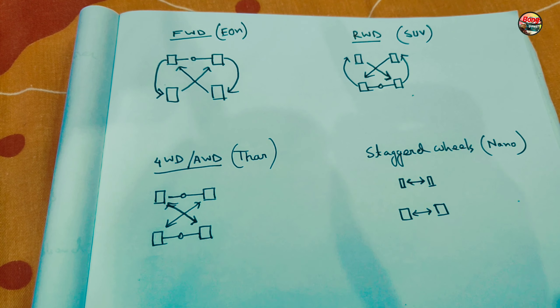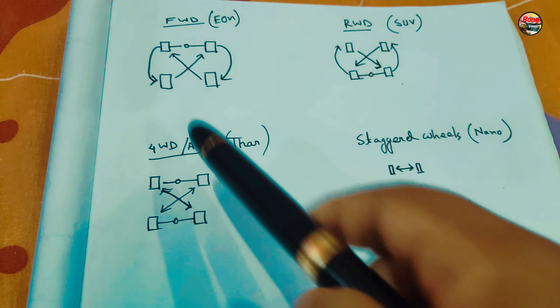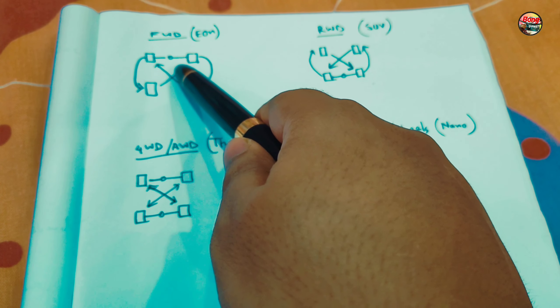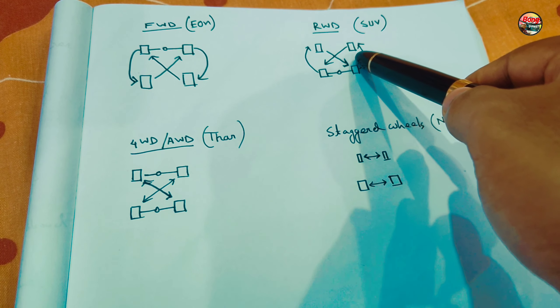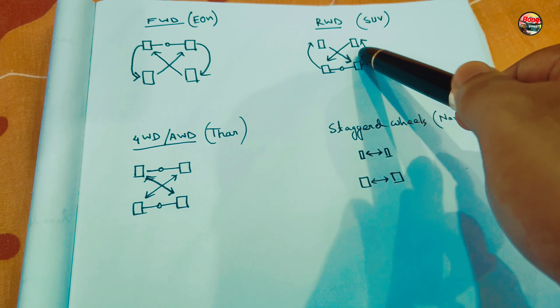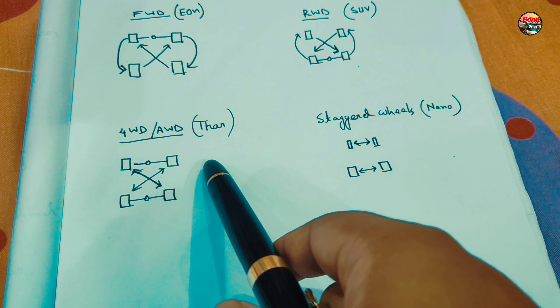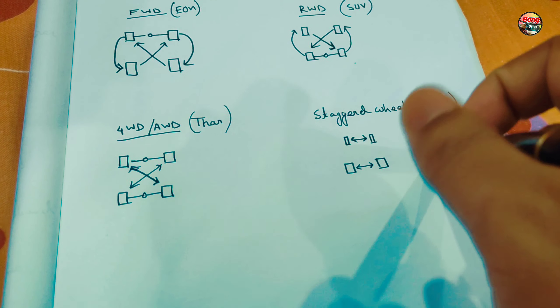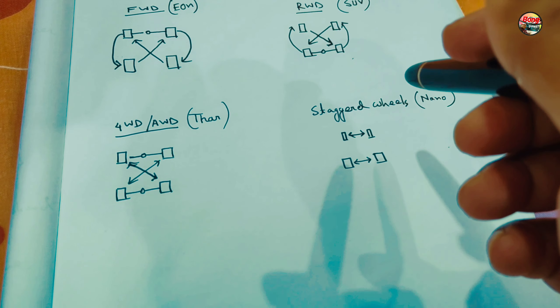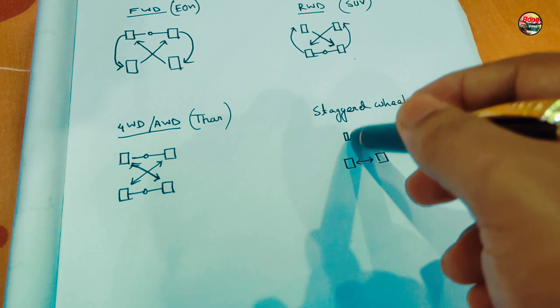So now you understand why we should rotate our car tires very frequently. Next we are going to discuss the proper method for this process for different types of cars. I've prepared a diagram covering four different types: FWD cars like the Hyundai Eon, RWD rear-wheel drive cars like SUVs, tempos, and trucks, four-wheel drive or AWD cars, and a staggered setup like rally cars or the Tata Nano where the tire size is different front to rear.